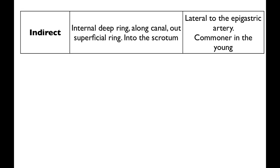Indirect hernias come through the deep ring, go along the inguinal ligament, along the inguinal canal, out the superficial ring, and then enter into the scrotum.